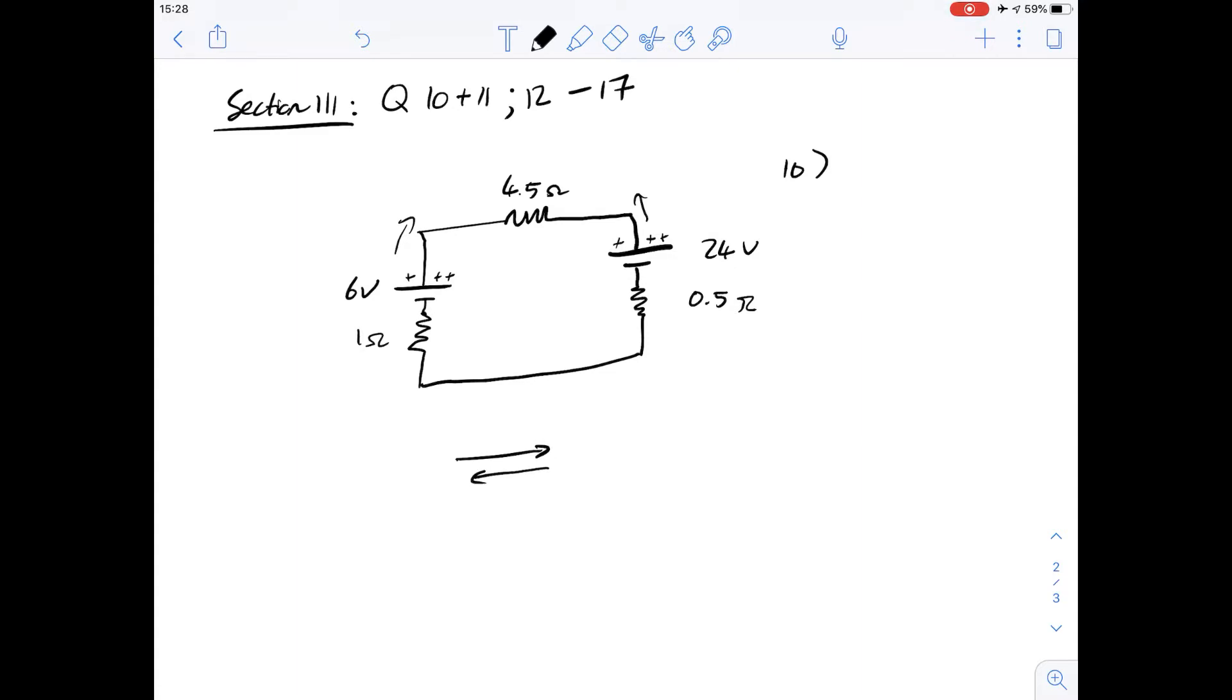The resultant EMF is just one minus the other, so you've got 24 volts in one direction from this battery and you've got 6 volts in this direction from the other battery. So the overall resultant EMF is going to be 18 volts and that's answer B.